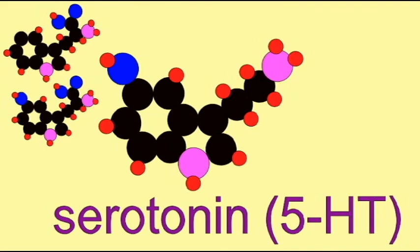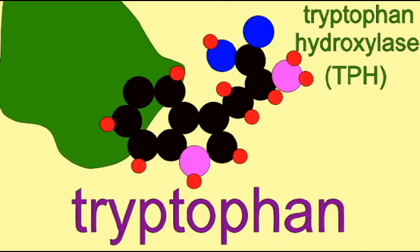There are two forms of tryptophan hydroxylase, one of which can be found in several tissues and includes the pineal gland of the brain, and the second form,